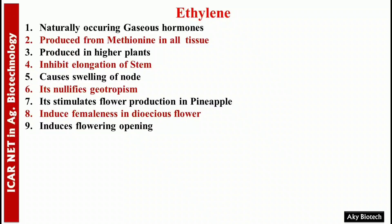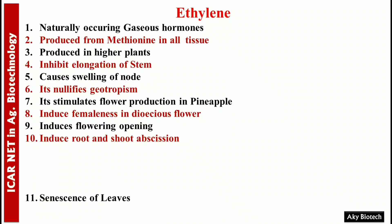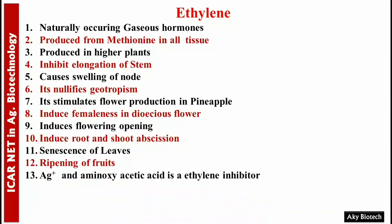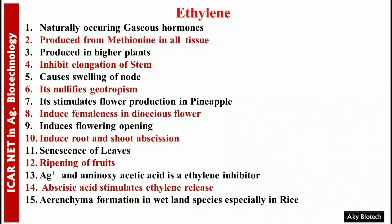Number five, it nullifies geotropism. Number seven, it stimulates flower production in pineapple. It induces femaleness in dioecious flowers. It induces flowering and opening. It causes root and shoot abscission, senescence of leaves, and ripening of fruits. Silver ions and aminooxyacetic acid are ethylene inhibitors. Epibrassinolide stimulates ethylene release. Aerenchyma formation in wetland species, especially rice, is also associated with ethylene.